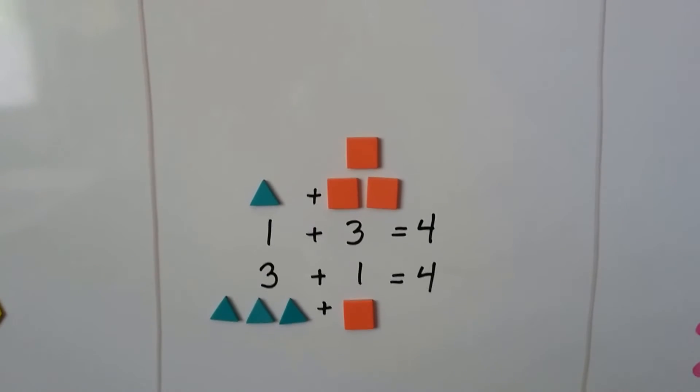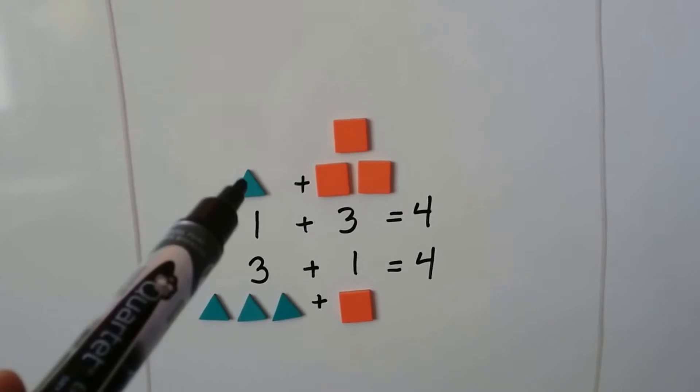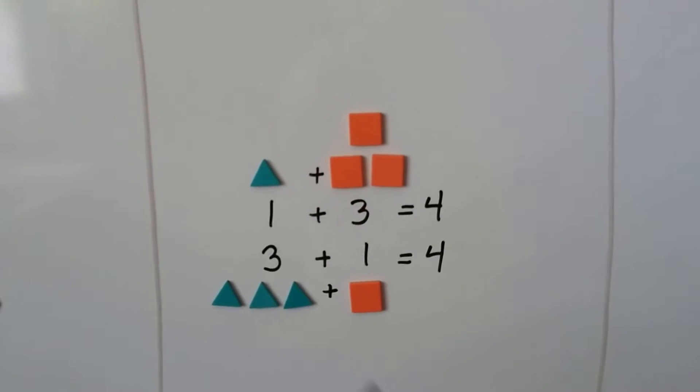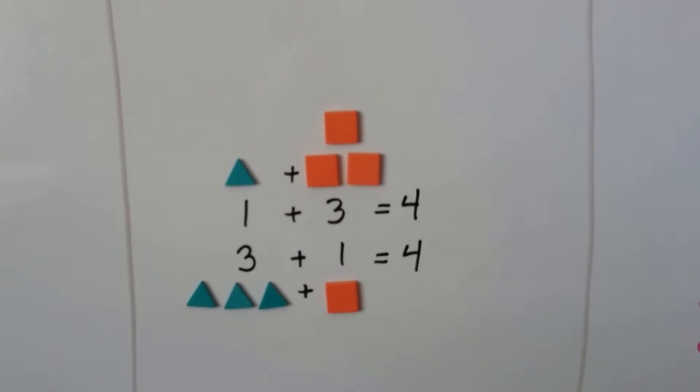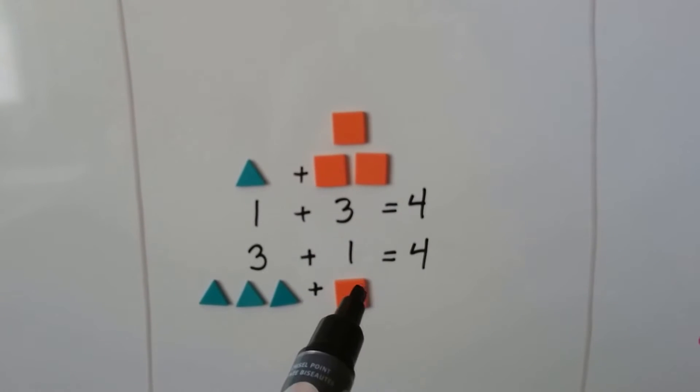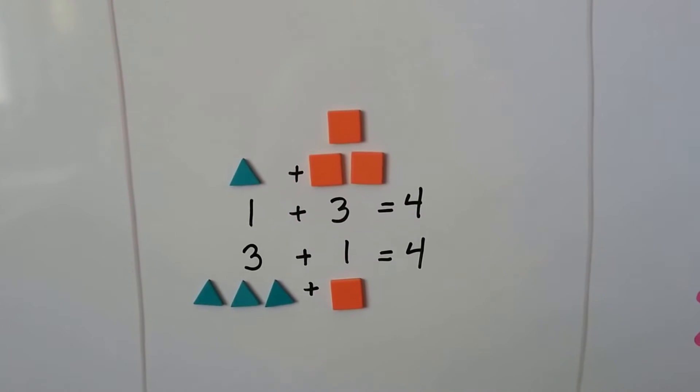Here's some more sums of four. We have one green triangle here and three square orange ones. When we add them together, we get four. Now we have three green triangles and one orange square. When we add them together, we get four.